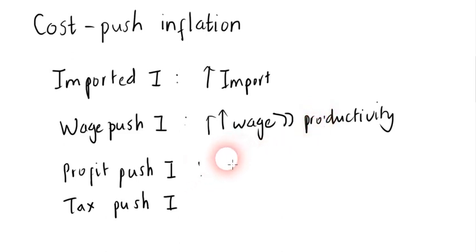Thirdly, profit push inflation originates from firms having too much market power in the market. When the cost of production increases, firms can raise the price to a great extent when the demand of the goods is price inelastic.